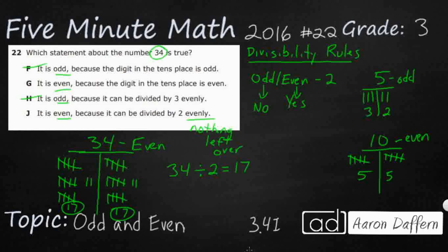Look what G says though. It's even because the digit in the tens place is even. Well, first off, that is a digit in the tens place, but it's not even. So that's definitely not going to be it, which means our answer is going to be J. Even if the digit in the tens place was even, it doesn't really matter.